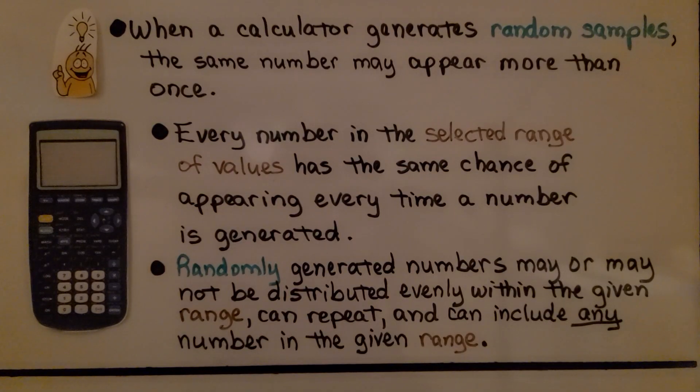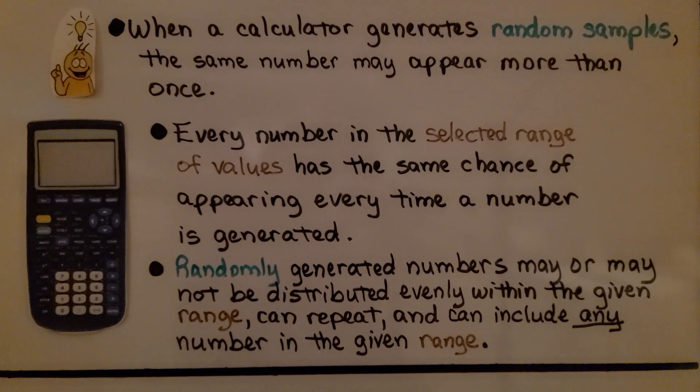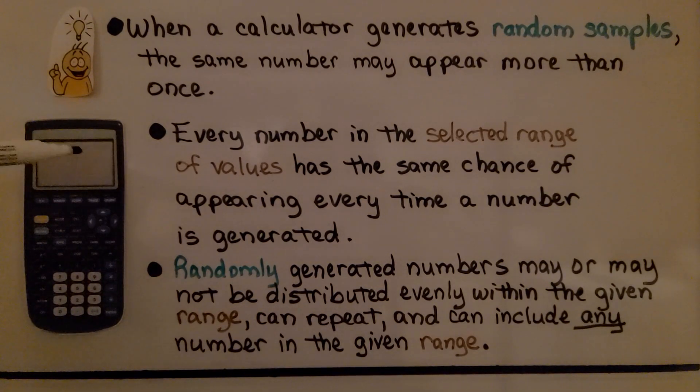When a calculator generates random samples, the same number may appear more than once. So when those random numbers appeared on the right side of the screen, we might get a duplicate.